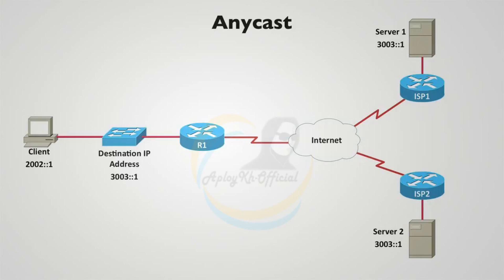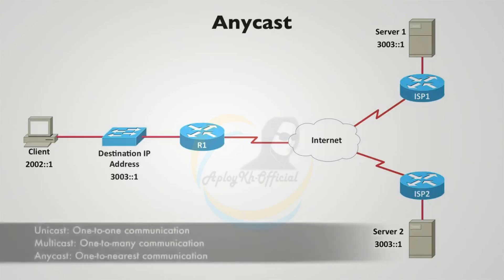The big takeaways are: Unicast is one-to-one communication. Multicast is one-to-many communication — specifically to devices that have joined a multicast group. And Anycast is one-to-nearest communication.